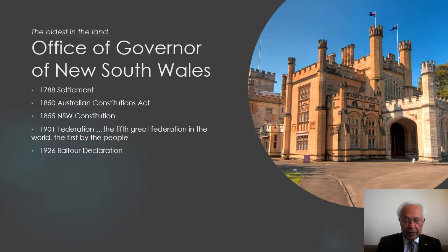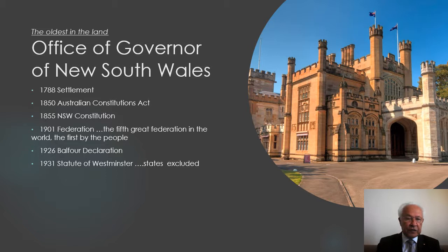And that was effected by the Declaration, and then by legislation, the Statute of Westminster, which went through the British Parliament. But in relation to Australia, it had a special feature, and that was that it did not apply to the states. The states did not become part and subject to the Statute of Westminster.